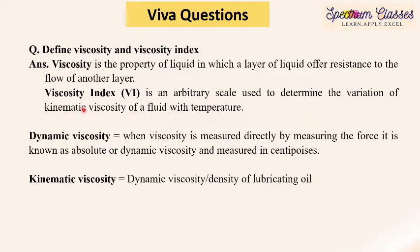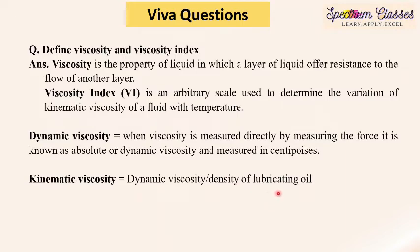Since viscosity index introduces the term kinematic viscosity, we must understand the different types of viscosity. Dynamic viscosity: when viscosity is measured directly by measuring the force, it is known as absolute or dynamic viscosity, and is measured in centipoise. Kinematic viscosity is dynamic viscosity divided by the density of the lubricating oil or sample, and is determined in centistokes. What we measured in this experiment is Redwood viscosity.